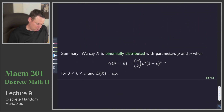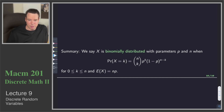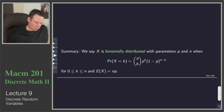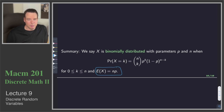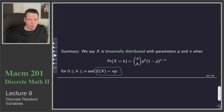We say that a random variable is binomially distributed with parameters p and n when the probability of the random variable equal to k is the binomial coefficient n choose k times p to the k times (1 minus p) to the n minus k. We've just shown that the expected value is np. So whenever we've got a random variable that's binomially distributed and we get that expression, the expected value is going to be n times p.